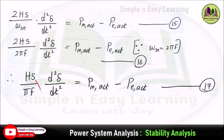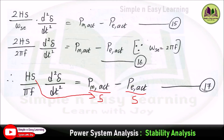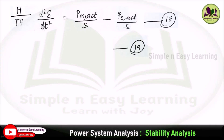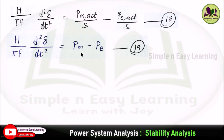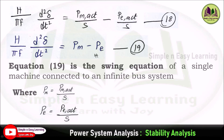Bringing S to the right side as the denominator gives: (H / πf) · (d²δ/dt²) = PM_act/S − PE_act/S (Equation 18). Here, actual power divided by base power S gives the per-unit value. So PM_act/S = Pm (per unit) and PE_act/S = Pe (per unit). Therefore, (H / πf) · (d²δ/dt²) = Pm − Pe (Equation 19). This is the swing equation of a single machine connected to an infinite bus system.